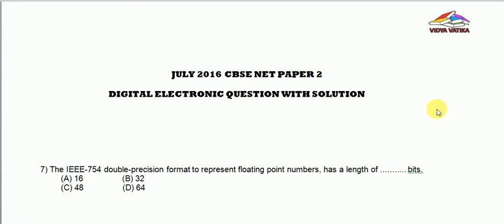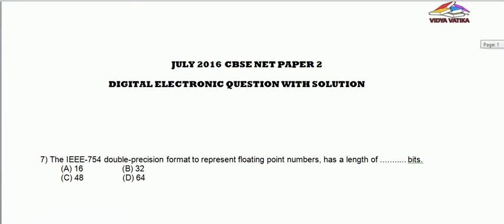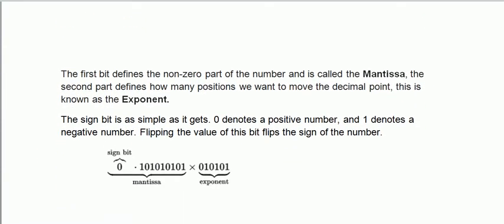Floating point numbers basically has three parts. One is sign bit, other is mantissa and the last is exponent. Now what is mantissa? Mantissa is the fractional part of that number.